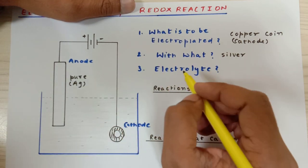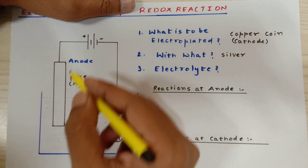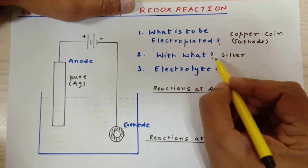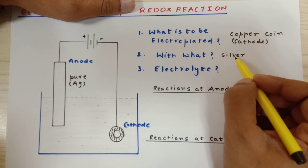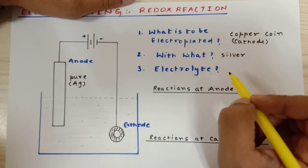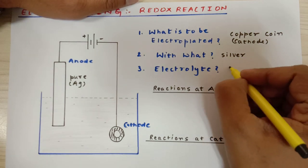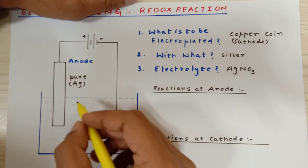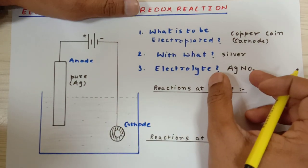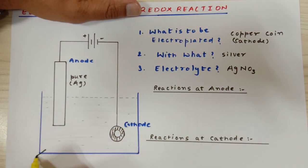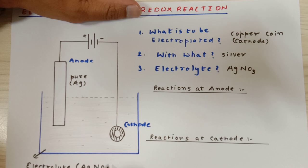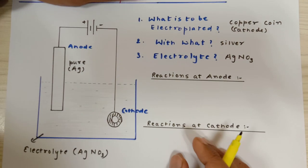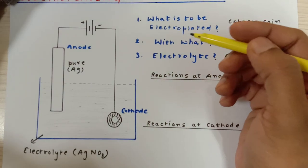The electrolyte compulsorily has to be a compound of the anode element. Here I wanted to electroplate this copper coin with silver, so I require an electrolyte of silver only. I am going to consider silver nitrate solution as the electrolyte. So basically, AgNO3 is going to be the electrolyte. This is electrolyte, this liquid over here, which is a compound of the silver rod itself.